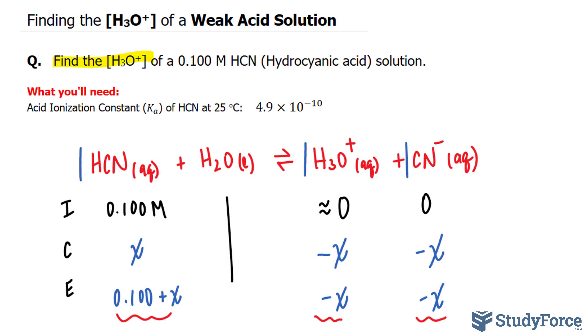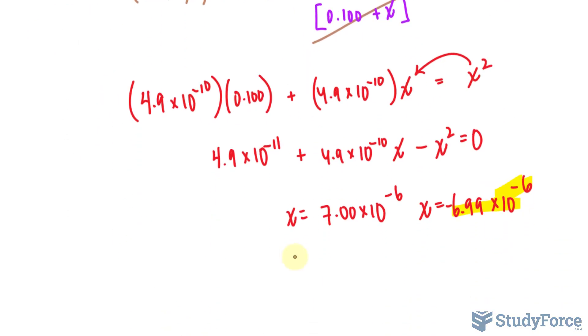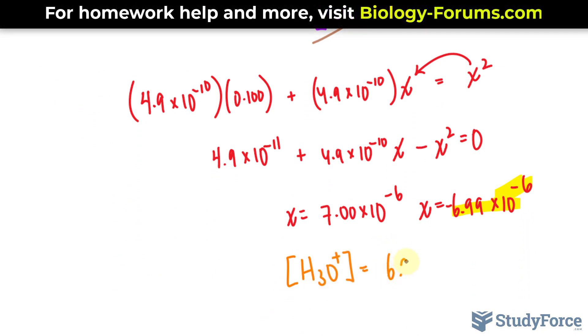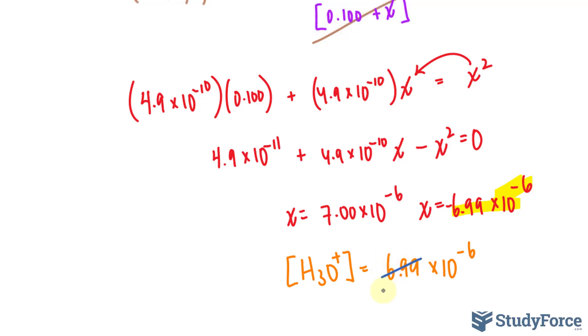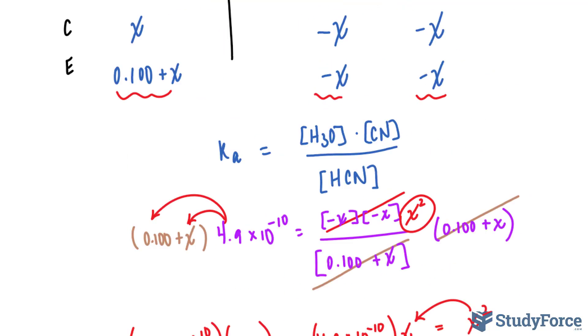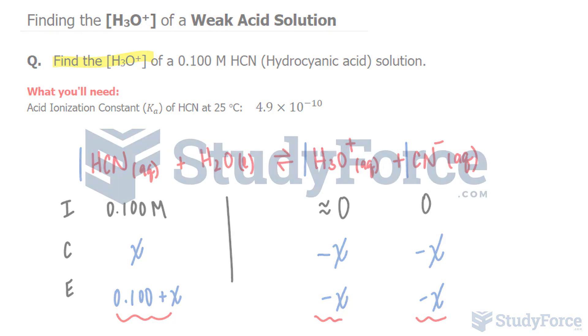Of course, we want this to three significant figures, so I'll write this out as the hydronium concentration is equal to 6.99 times 10 raised to the power of negative 6. And just to be clear, we want this to three significant figures. It turns out that we should even write down 7.00 times 10 raised to the power of negative 6 molar. And there you have it. That is how to find the hydronium concentration of a weak acid solution.